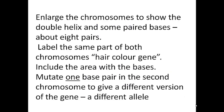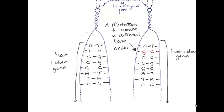Enlarge those chromosomes to show the double helix and draw in some paired bases — six or eight pairs will be plenty. Label the same part of both chromosomes as the hair colour gene, including the area with the bases. Then mutate one base pair in the second chromosome to give a different version of the gene — a different allele.